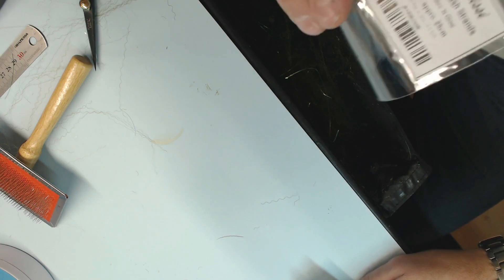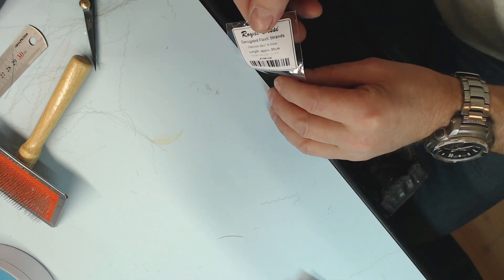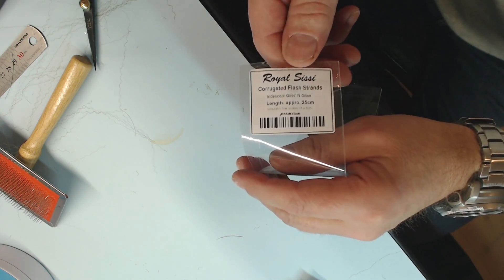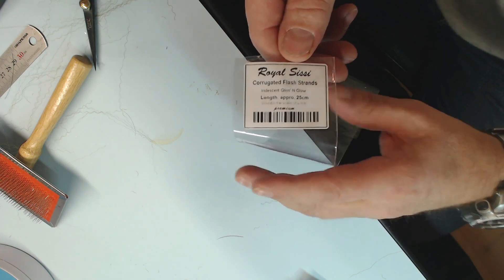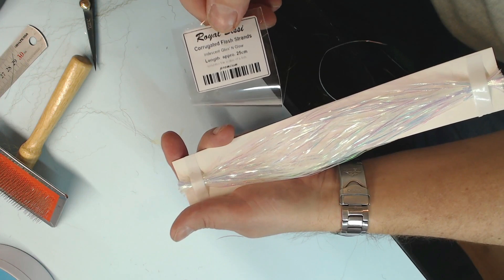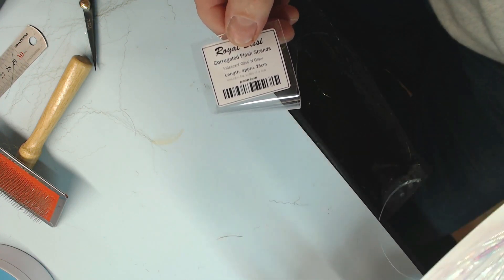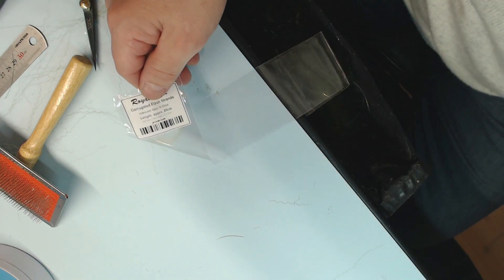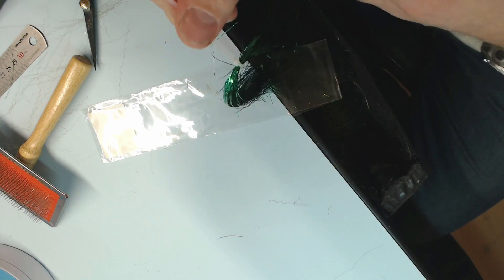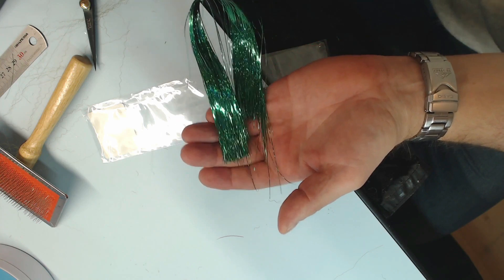Sorry. This is an off brand. It's called Royal CC Corrugated Flash Strands. I got it from AliExpress. But that's not important. You can get it there from other places as well. So that's how it looks like. And of course, you can use some holographic or some other flash if you have that. I like the holographic because it's very shiny.